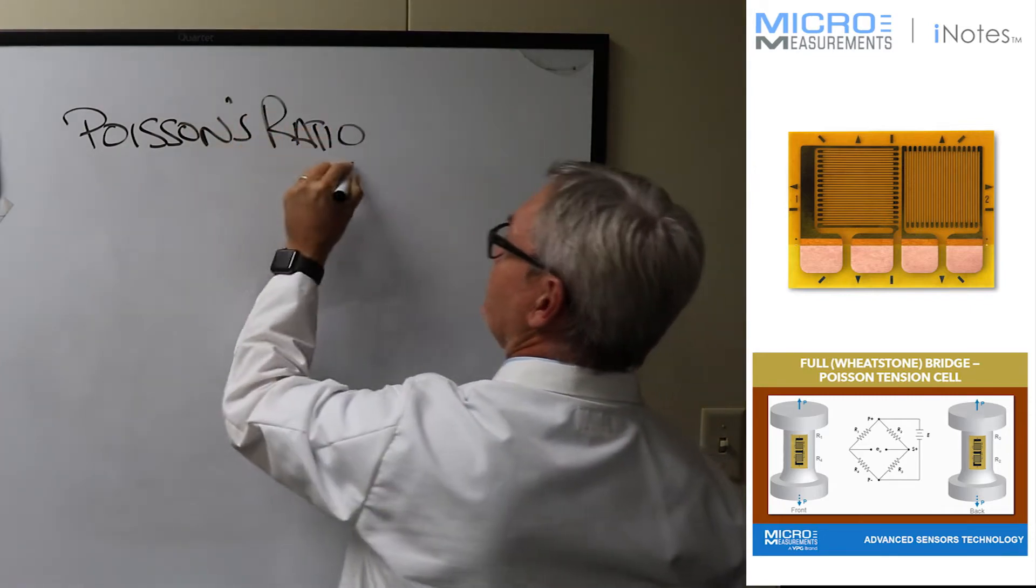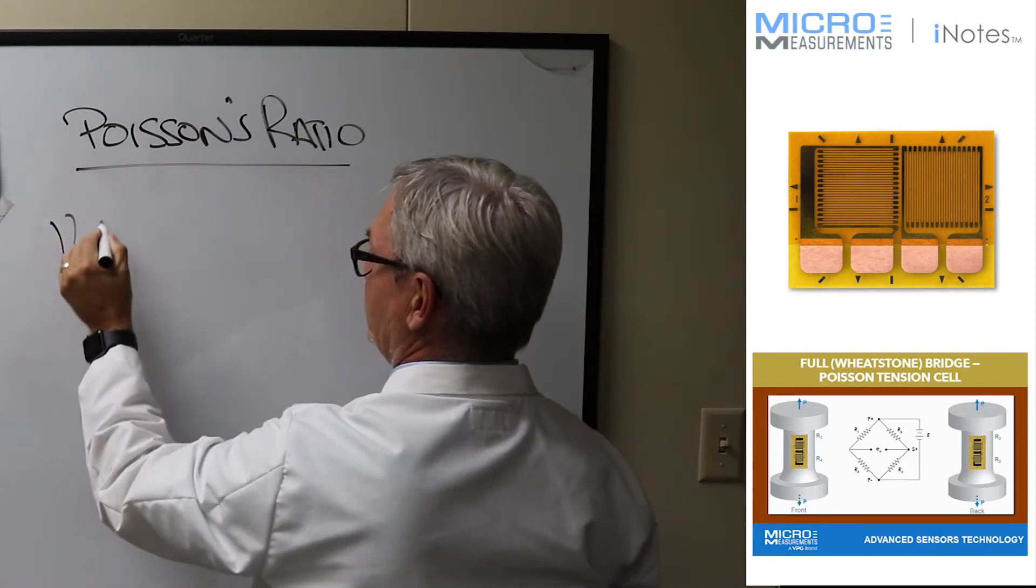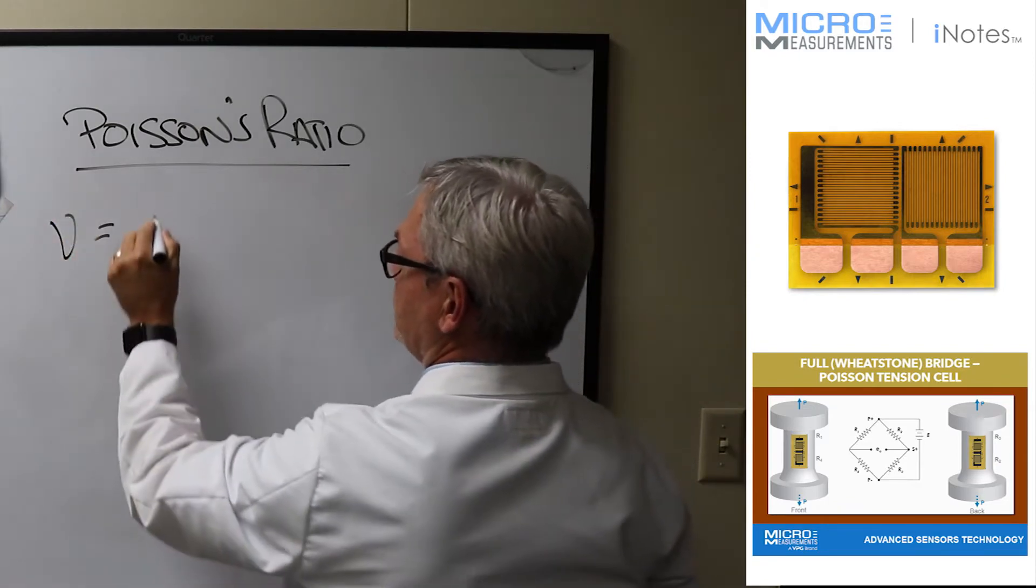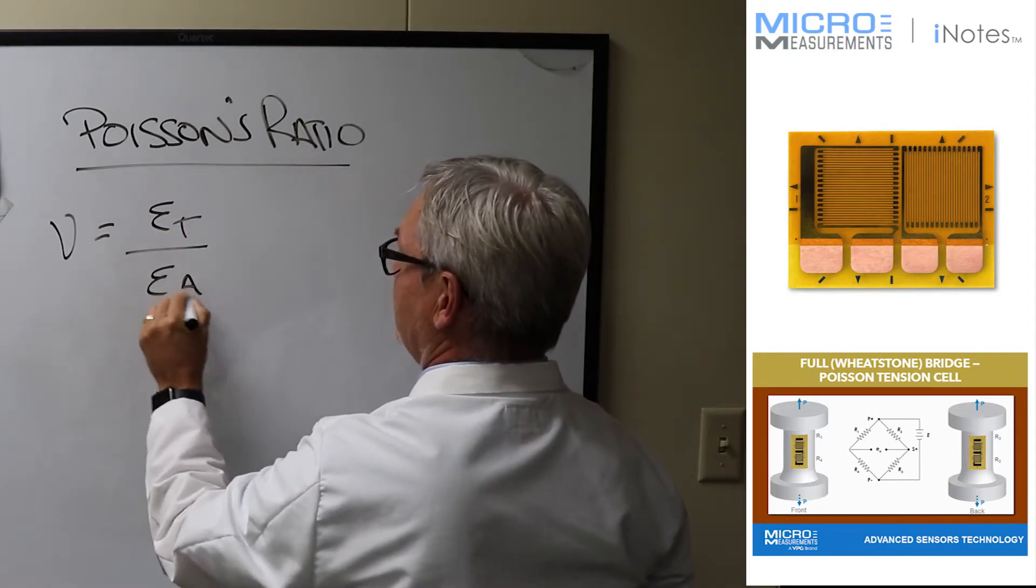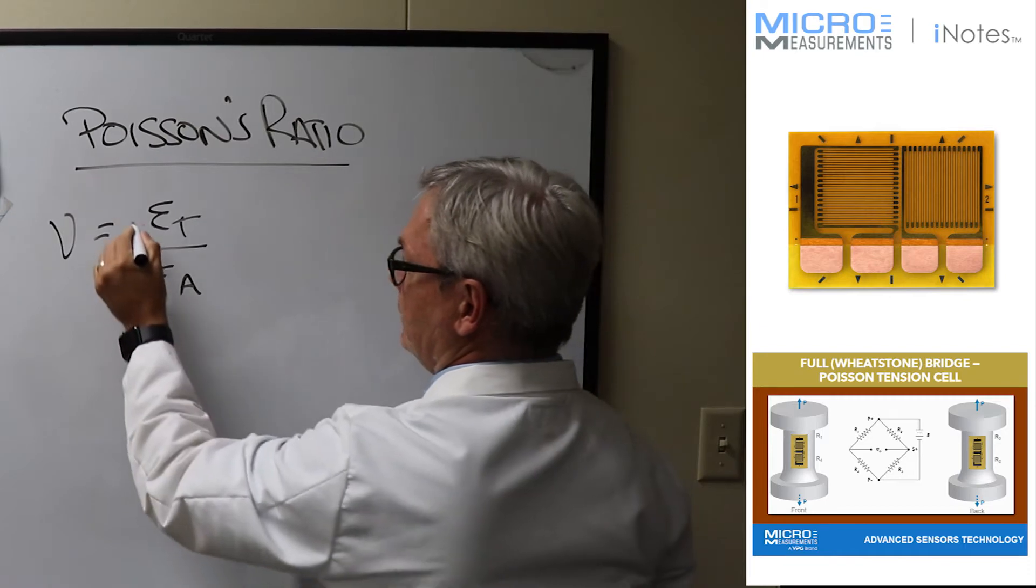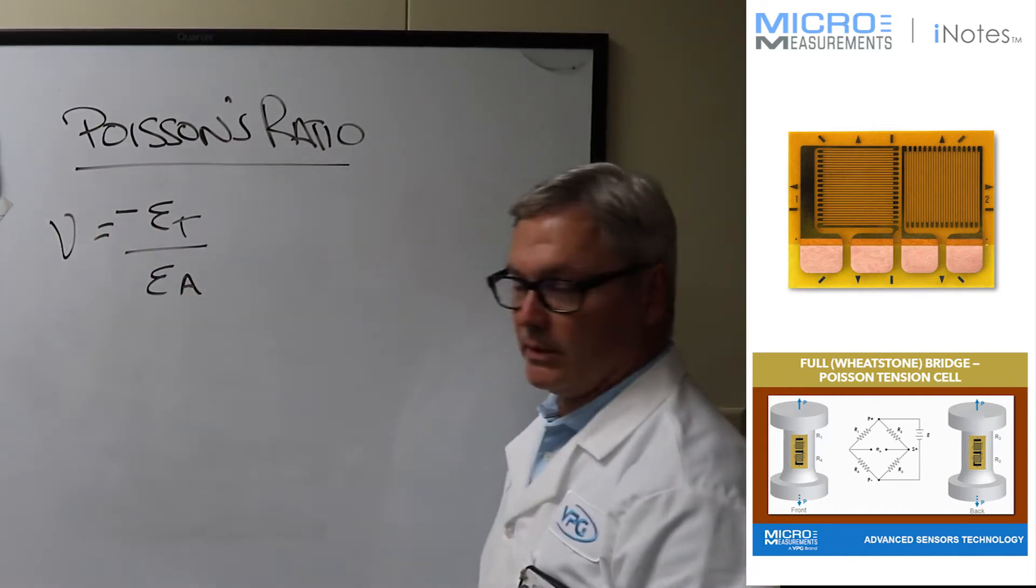Poisson's ratio, if we look at the equation for it, it's given by the Greek letter nu which is equal to the strain in the transverse direction divided by the strain in the axial direction, and you'll typically see it written with a negative sign so that they reverse the sign.